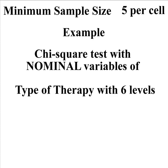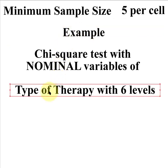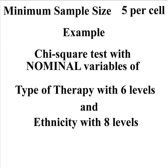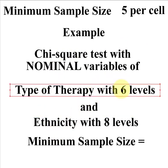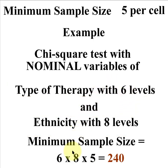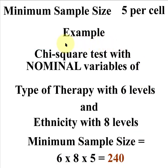Let's do one more quick example to cement this in. We're doing a chi-square test where the first variable is type of therapy with six levels, and the other nominal variable is ethnicity with eight levels. So we take six times eight — six levels of types of therapy, eight levels of ethnicity — times five, the minimum per cell. That comes to a grand total of 240, which is the minimum sample size needed for this specific chi-square test.